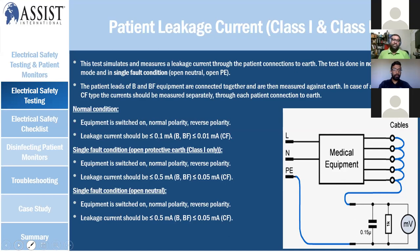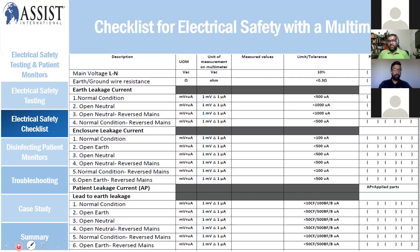You have to be careful — there is quite a lot of risk, such as when opening the neutral line and making connections. If done incorrectly, you can get electrocuted. But you can still measure leakage current this way. Looking at the checklist, using one millivolt equal to one microamp, you are limited to measuring main voltage, earth resistance, earth leakage current, enclosure leakage, patient leakage current, and lead-to-earth leakage current. These measurements are good enough to assess leakage current on your equipment.